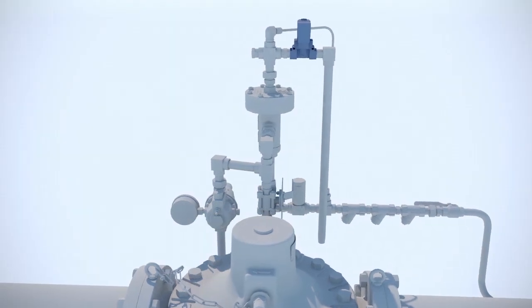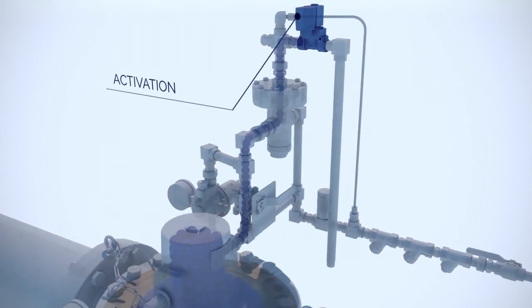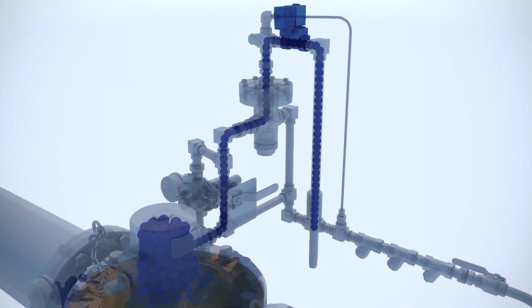The activation, therefore the opening of the deluge valve, occurs by releasing the pressure held in the priming chamber.